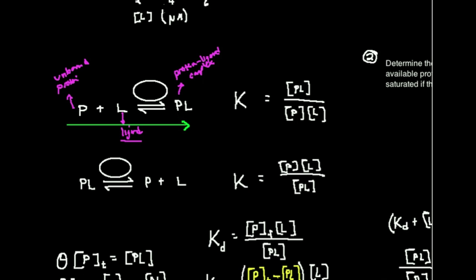Now sometimes K_A can be confusing because it's sort of the same variable for acid dissociation constant. But in the context of protein function, generally K_A is going to refer to an association constant, because when you read this from left to right, the protein is associating with the ligand to form the complex.